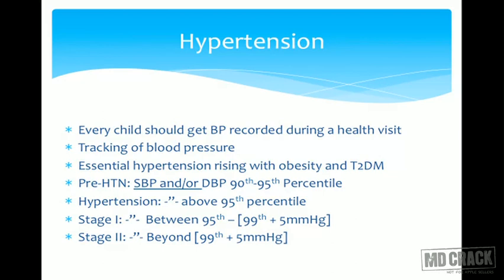Hypertension is becoming more common in adolescents and the pediatric age group, particularly in obese children and those in urban areas. Ideally every child should undergo blood pressure recording after one year of age at each OPD visit, because of the phenomenon called tracking of blood pressure. If a child is hypertensive, he is likely to be hypertensive during adolescence or adulthood, and vice versa.